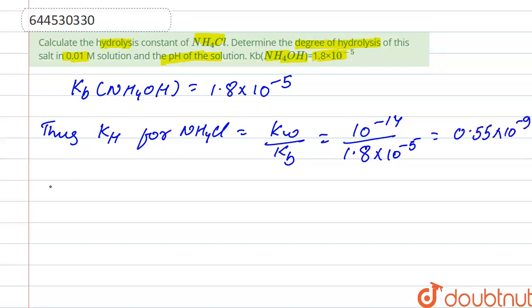Again, we know that Kh is equal to C alpha square, where alpha is degree of hydrolysis.